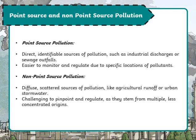Moving to another concept: point source and non-point source pollution. A point source pollution is a direct source of pollution, such as industrial discharges or sewage outfalls. It is easier to monitor and regulate due to specific locations of pollutants. A non-point source pollution is a diffuse, scattered source of pollution like agricultural runoff or urban stormwater, and is challenging to pinpoint and regulate as it stems from multiple, less concentrated origins.